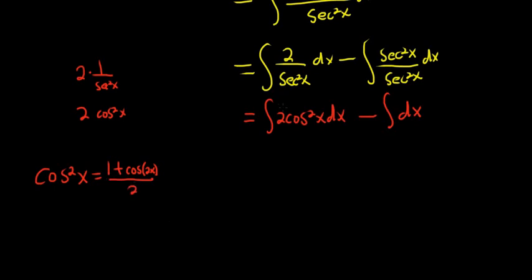There's already a 2 here, which is really cool. So it destroys the other 2 because they cancel. So you just get 1 plus cosine 2x, parentheses dx minus dx.